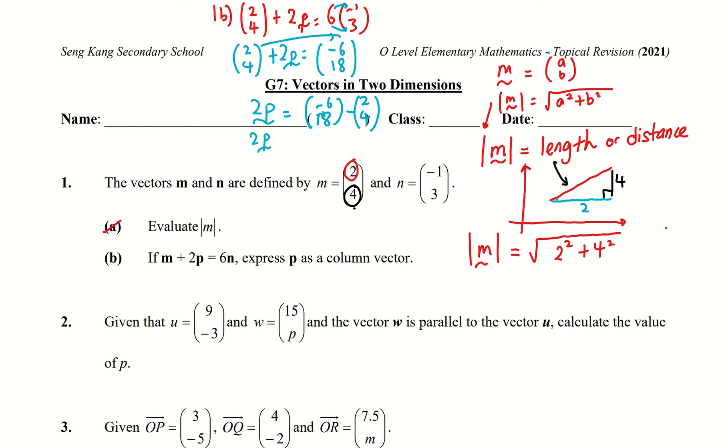And 2p is actually equals to negative 8 and 14. P is equal to - then I divide by 2, right? So same as the vector that you see on top. Half means you will divide all the numbers, divide individual vector by the scalar. So then this is the answer for 1b.